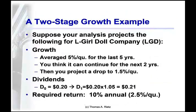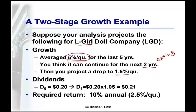The easiest way to do this is with an example — the L-Girl Doll Company, for Leah and Linnea. Suppose you've averaged 5% growth per quarter for the last five years and think you can do it for two more years. If you pay dividends quarterly, that's eight periods. Then you project growth to drop to a more reasonable rate of 1.5% per quarter. The required return is 2.5%, and since the terminal growth rate of 1.5% is less than 2.5%, this will all work.